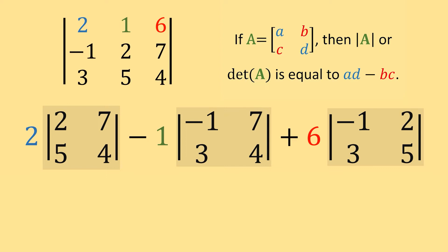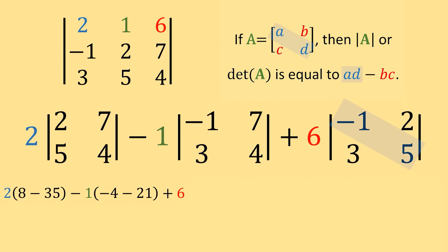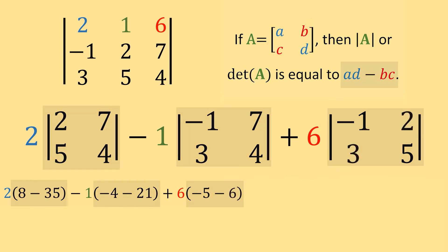We use this to guide us when calculating these 2x2 determinants. In the first determinant with 2, 7, 5, 4: I multiply 2 by 4 to get 8, then subtract 7 times 5 — so I get 8 minus 35. In the next determinant, I multiply negative 1 by 4 to get negative 4, and subtract 7 times 3 — so I subtract 21. And finally, I multiply negative 1 by 5 to get negative 5, and subtract 2 times 3 — so I subtract 6.